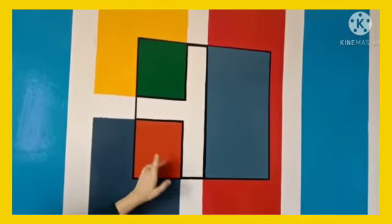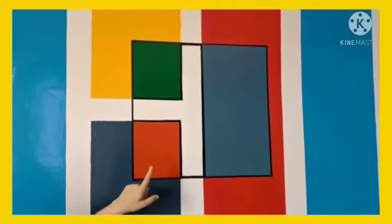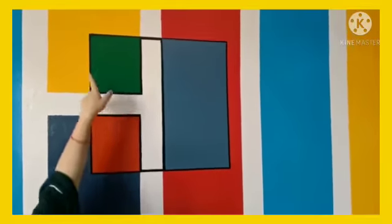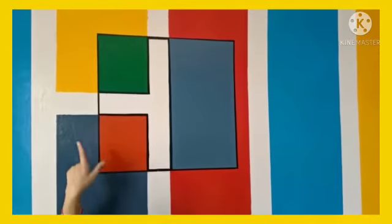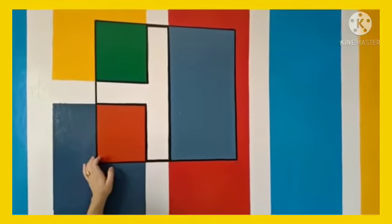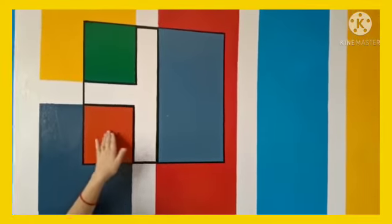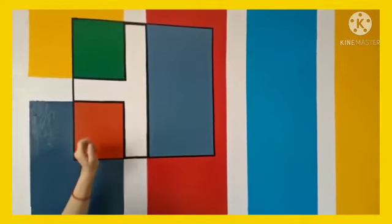And our next shape is square. This is a square. It has four sides. It has four sides. All sides are equal. It has four corners.